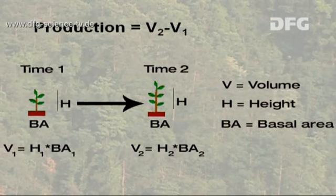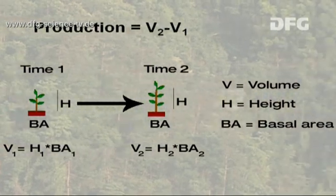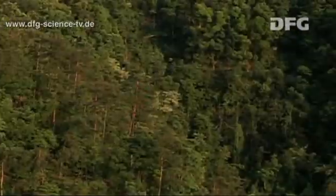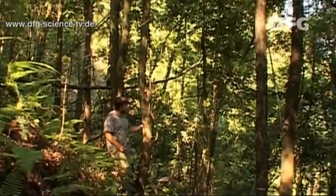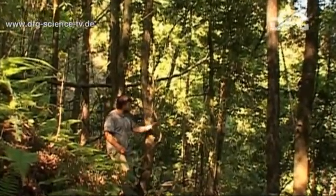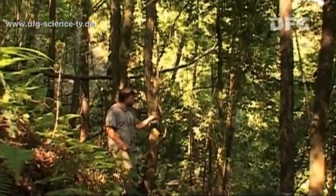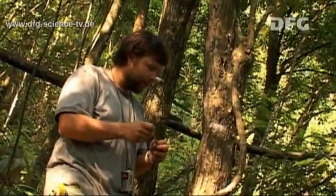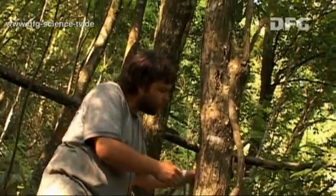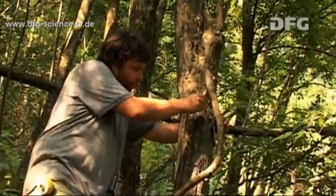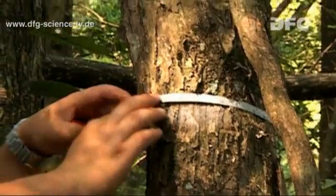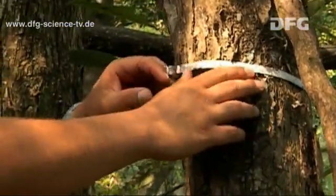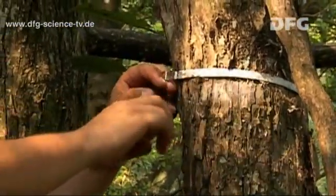But how can the relationship between primary production and biodiversity be tested? The researchers are comparing the growth rates of forests with different levels of biodiversity. They measure the growth rate by taking measurements on the trees, specifically the diameter of all tree trunks at breast height, referred to as the DBH.